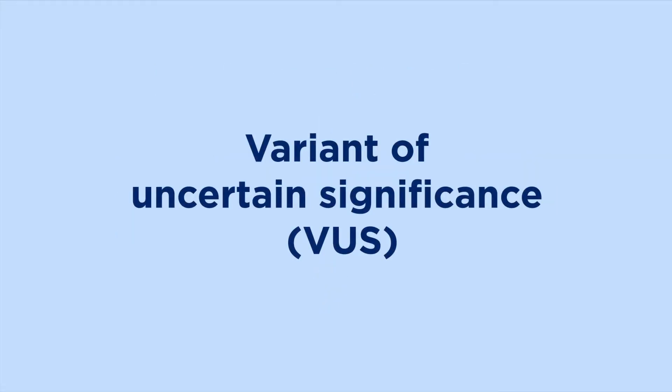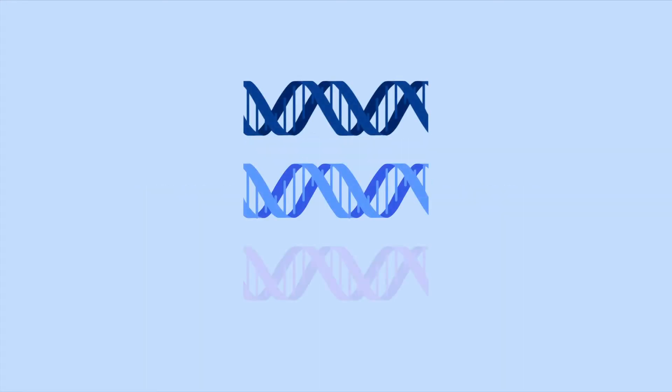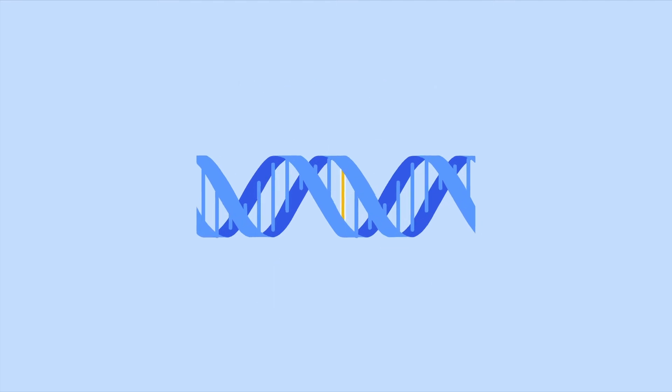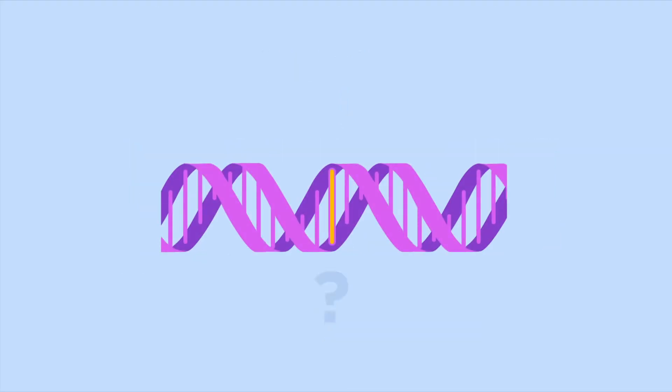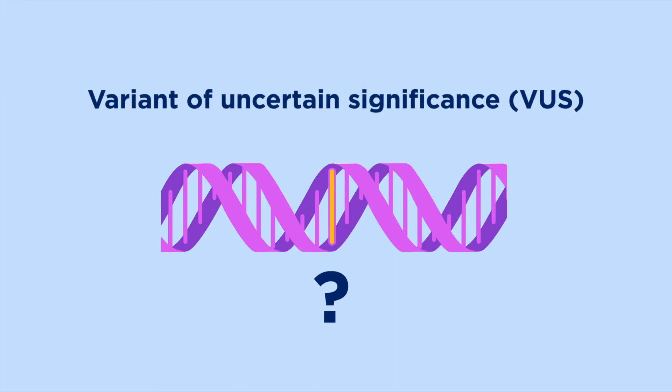Another type of result you may get is called a variant of uncertain significance. We all have variants in our DNA. Usually, they simply make us unique from one another and don't cause any health problems. Sometimes, a variant may cause health problems, like an increased risk for cancer. These are called mutations. But sometimes, we come across a variant we haven't learned much about. We call this a variant of uncertain significance, or a VUS.